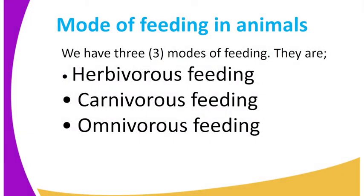We have three modes of feeding which include herbivorous feeding, whereby organisms feed on plants only; carnivorous feeding, whereby animals feed on meat; and omnivorous feeding, whereby organisms feed on both plants and animals. Today we'll only concentrate on the herbivorous feeding.